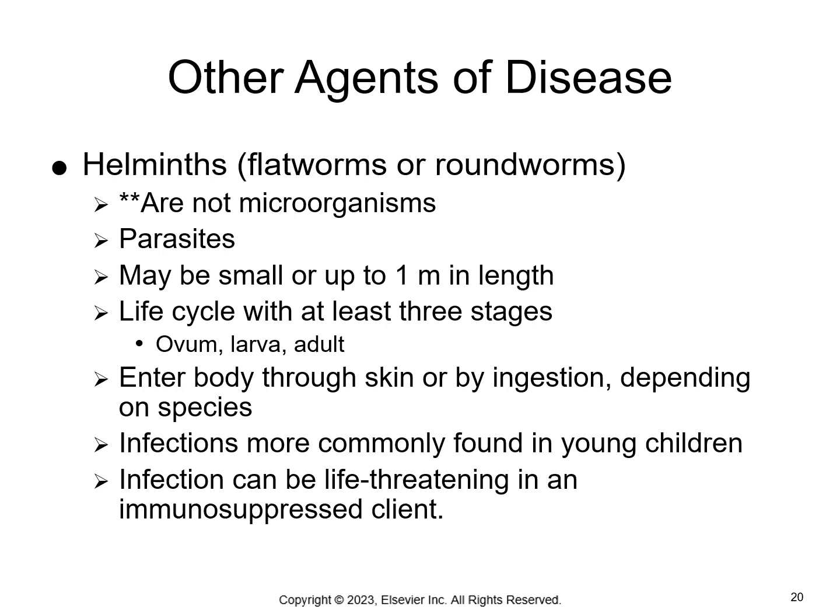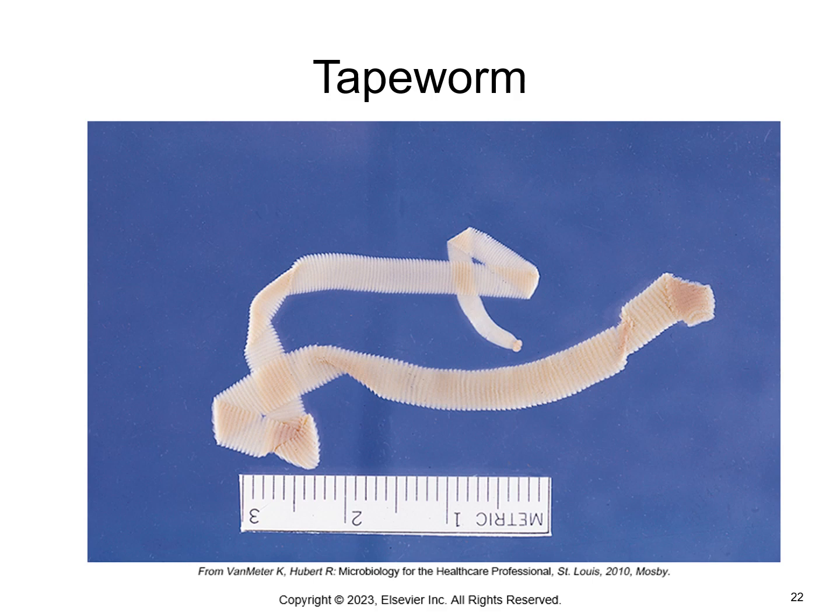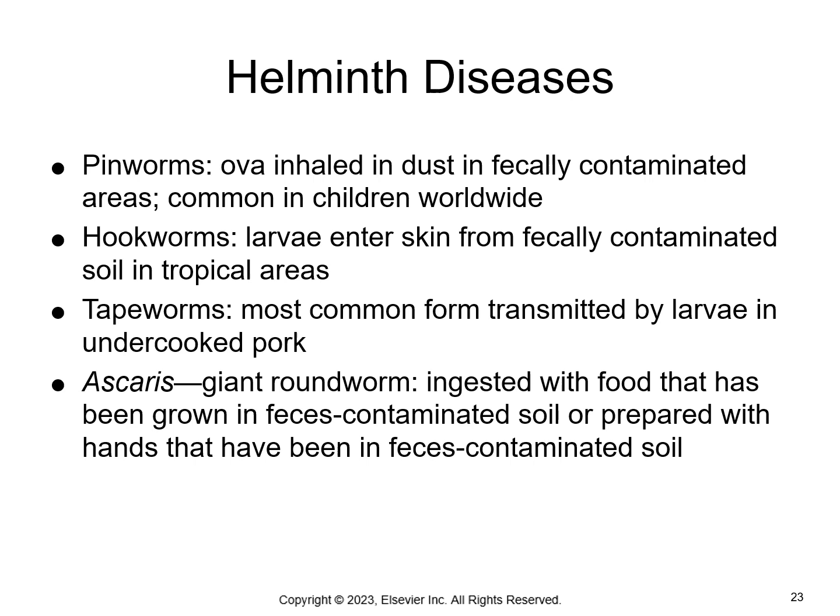Then we have helminths. These are other agents of disease — roundworms or flatworms. They're not microorganisms, but they're parasites. They're divided into subgroups depending on their characteristics. The life cycle has three stages: the ovum or egg, the larva, and the adult. The ova and larva can be ingested in contaminated food and water, or can enter through the skin, or be transmitted by infected insects. They're usually found in the intestines, but they can also be in the lungs or blood vessels, and they're usually diagnosed by finding them in the stool. We see pinworms, hookworms, tapeworms, and ascaris, which are giant roundworms — large numbers can cause systemic problems like severe anemia.